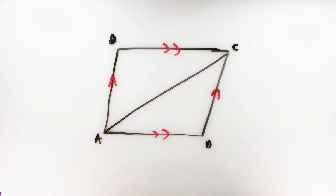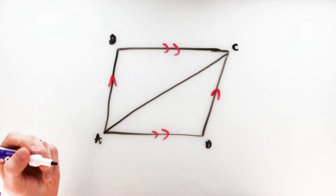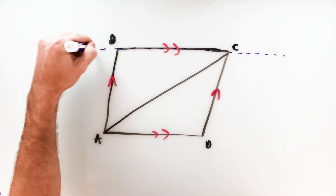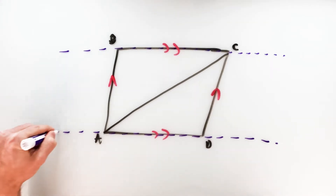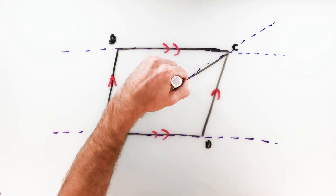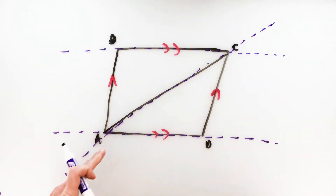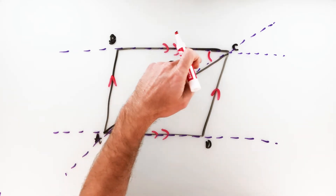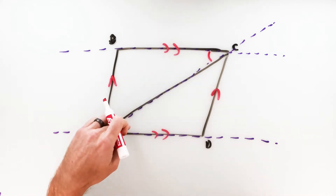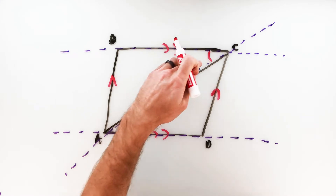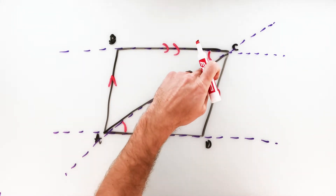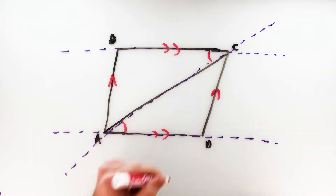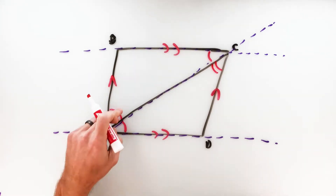The first step is to recognize that because we have parallel lines, we're going to have alternate interior angles. If I extend out the top and bottom of this parallelogram so we have two parallel lines, the diagonal is your transversal. Focusing on those two parallel lines and the transversal, we get alternate interior angles — on opposite sides of the transversal, in between the parallel lines — and alternate interior angles are always congruent as long as the lines are parallel. Looking at the other side of the transversal, we get a second pair of alternate interior angles that are also congruent.